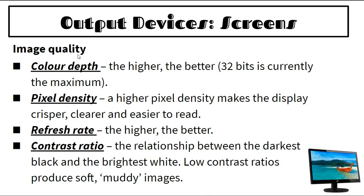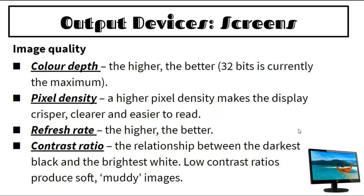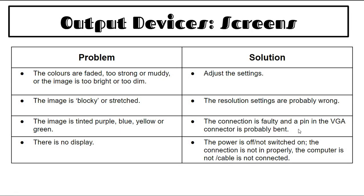Screen buying factors: resolution and image quality; color depth — higher is better; pixel density — higher density makes display crisper and easier to read; refresh rate — higher is better; contrast ratio — the relationship between darkest black and brightest white. Low contrast ratios produce soft, muddy images. Problem solving: faded or muddy colors — adjust settings. Blocky or stretched image — resolution settings are wrong.